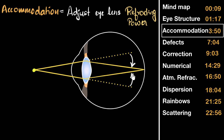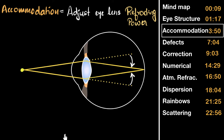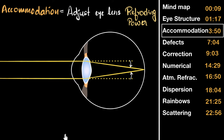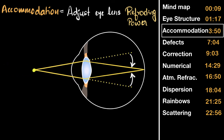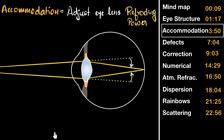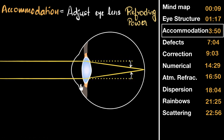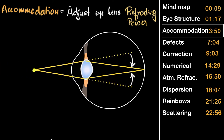If the object goes far away, less bending power is required; if it comes closer, more bending power is required. Our eyes adjust this refracting power depending on how far the object is — that is accommodation. It happens due to the ciliary muscles: when the object comes closer, the ciliary muscles push on the lens, making it more bulged and curved, which means more refracting power. When the object goes far away, the ciliary muscles relax, decreasing the refracting power. This is accommodation brought to you by the ciliary muscles.